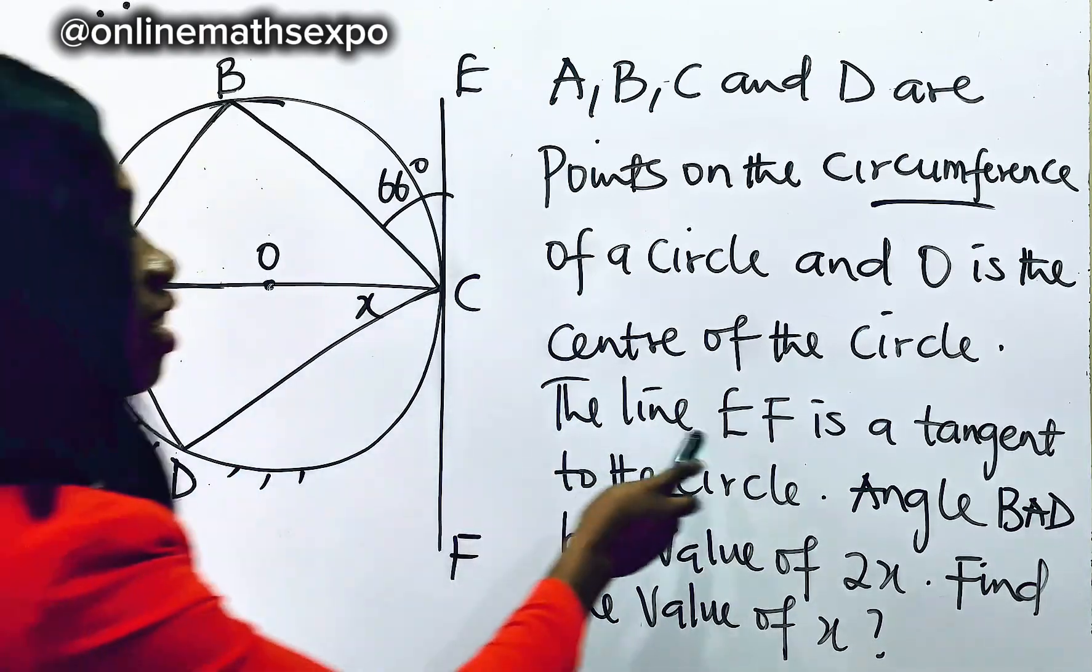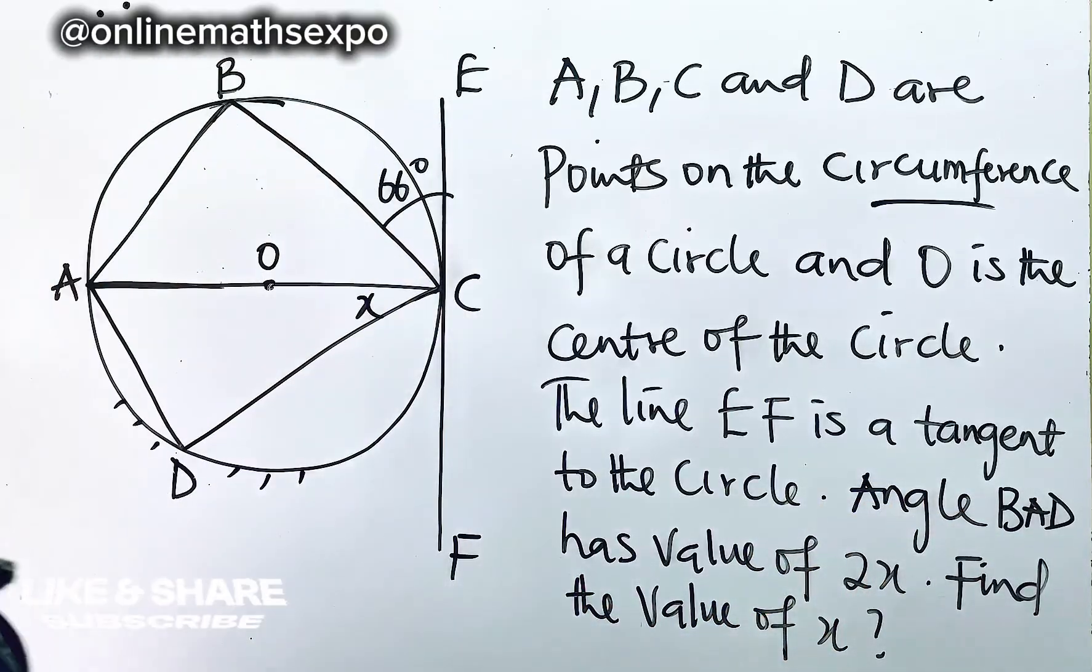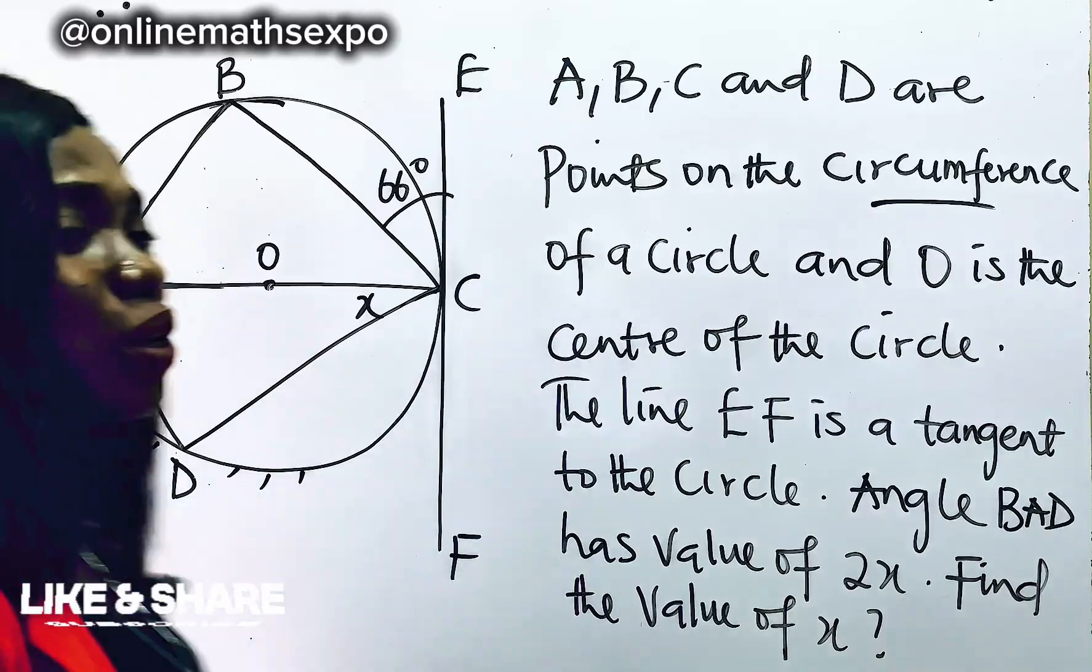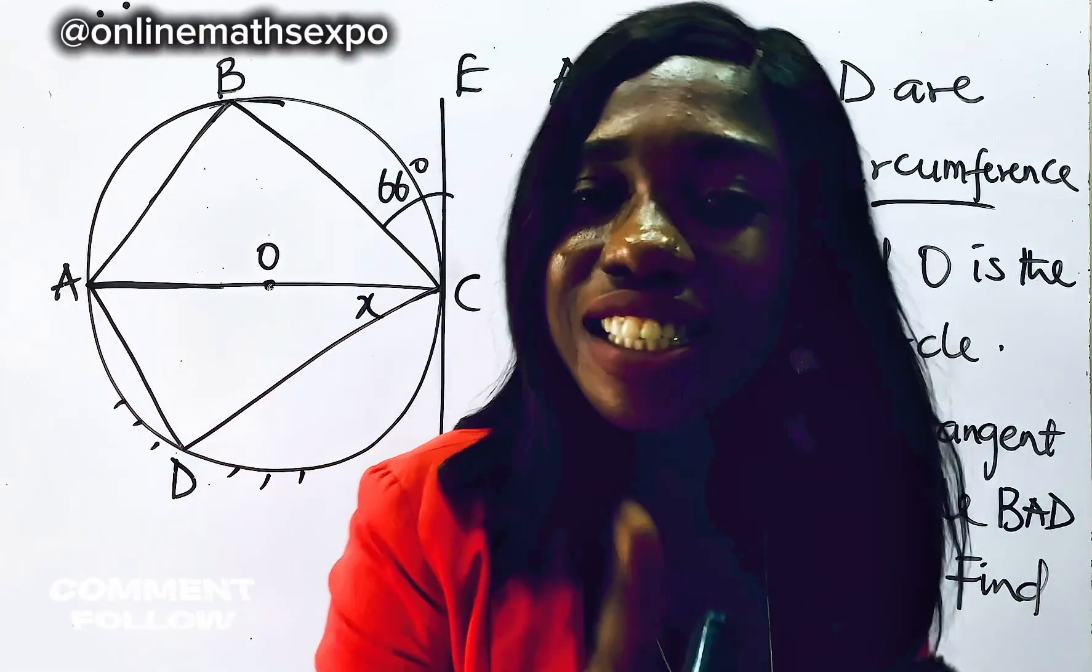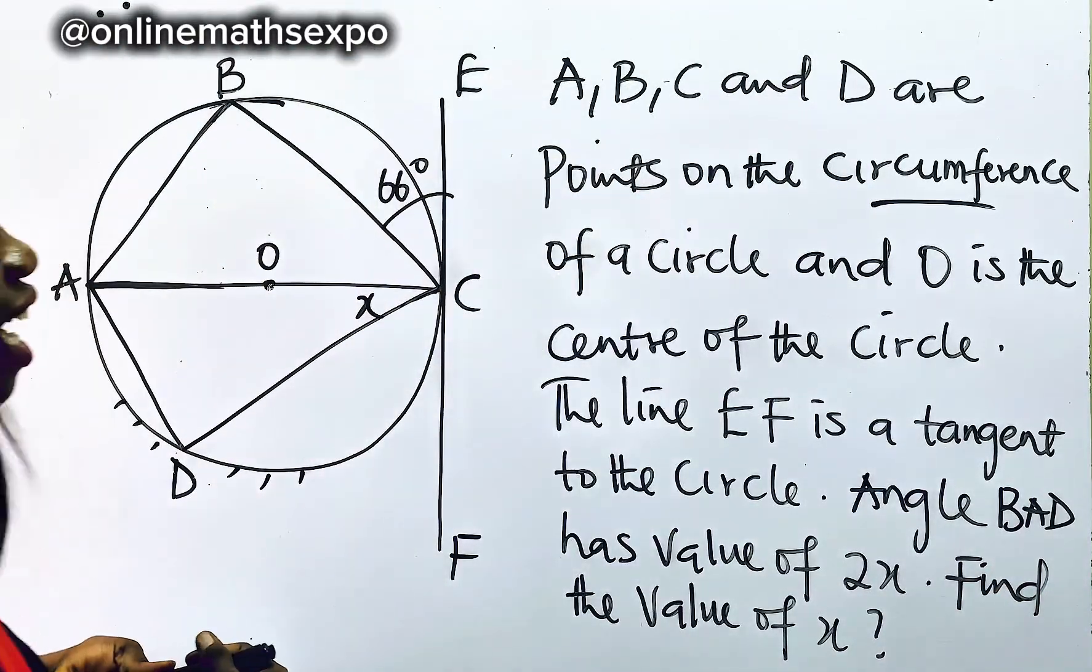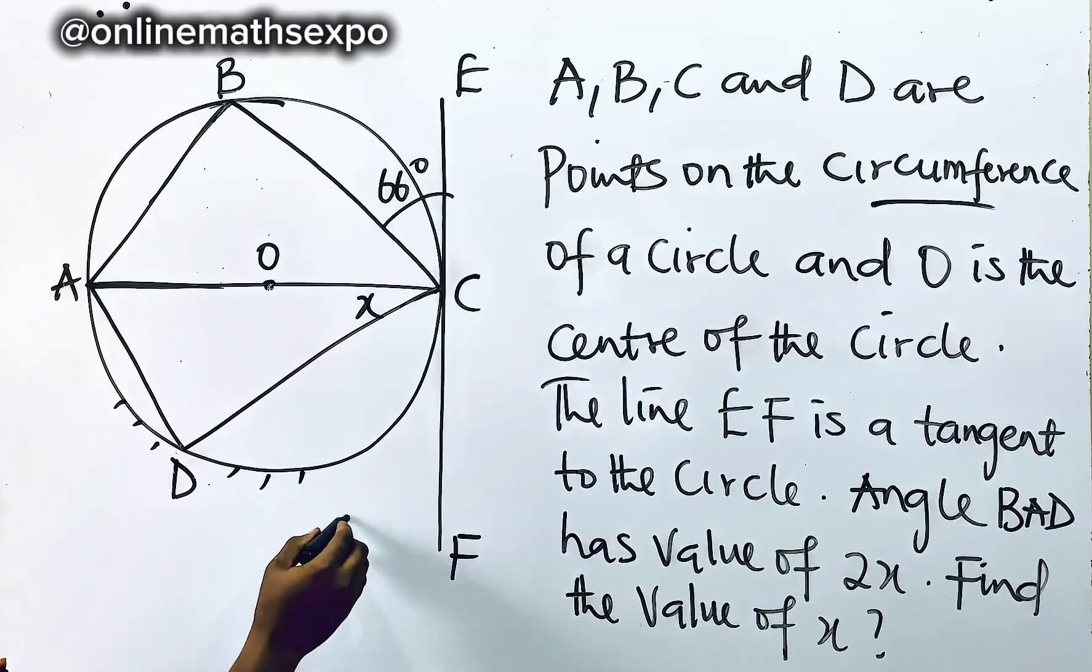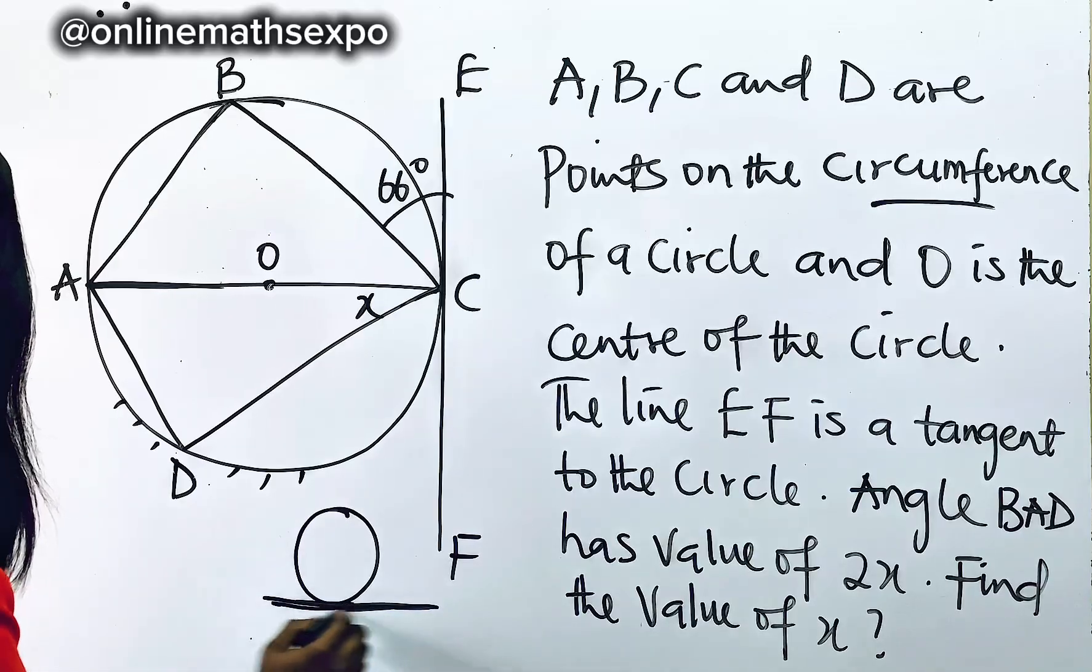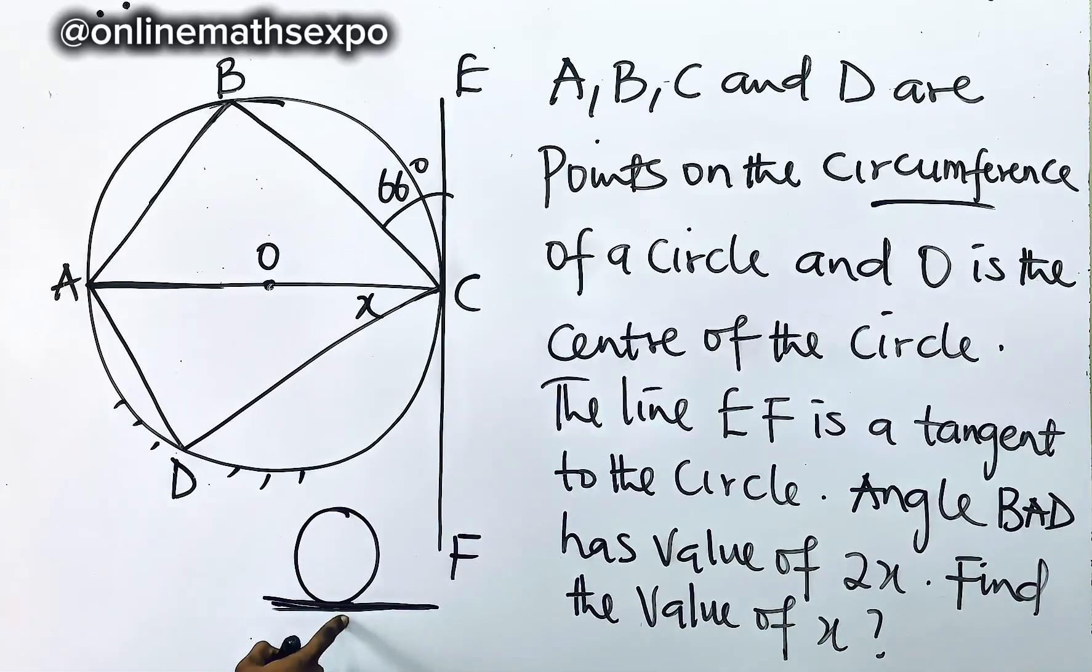And the line E, F is a tangent. So go to the line, this is E, F. That means this straight line is a tangent. And what does it mean? A tangent is simply a line that touches the circumference of a circle at a point and then moves away. Did you see? So this line is what we call a tangent line. And that is what you can see here.